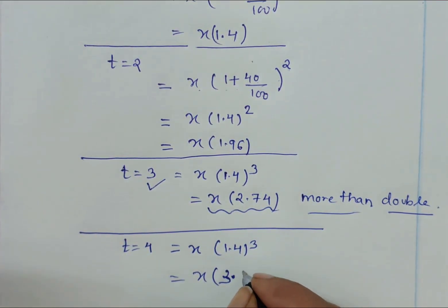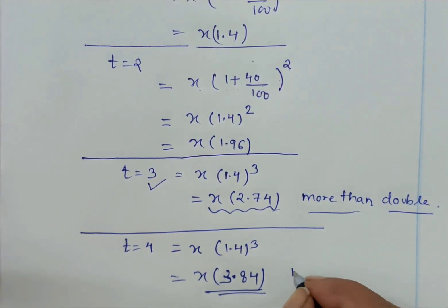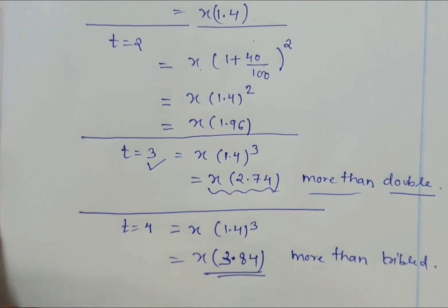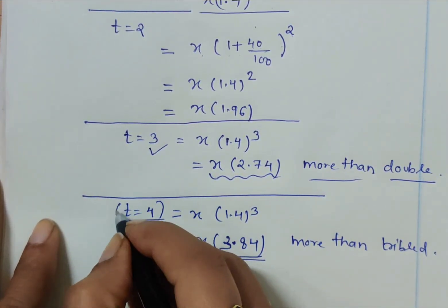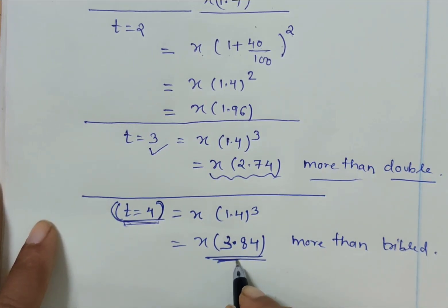This gives the desired result: more than tripled. So this is the value of t we were looking for - the number of complete years which will give the money as more than tripled.